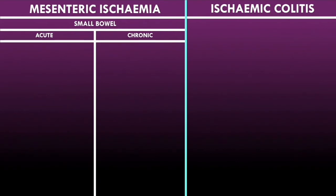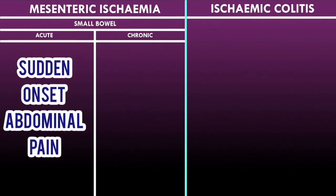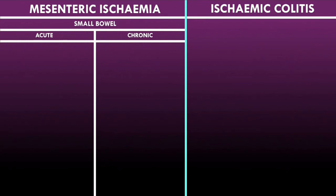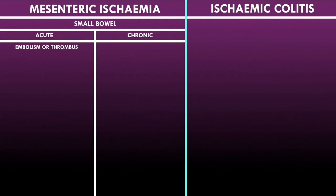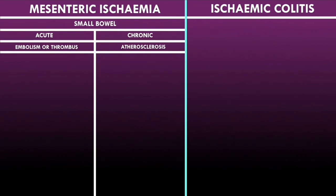In acute mesenteric ischemia, symptoms develop very suddenly with sudden onset abdominal pain. Because the pain is sudden onset, the cause is usually an embolism or thrombus. In chronic mesenteric ischemia, symptoms appear much more insidiously with gradual onset, and this usually occurs because of atherosclerosis of the vasculature supplying the small bowel.